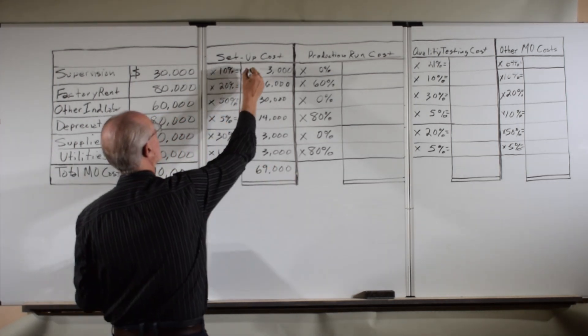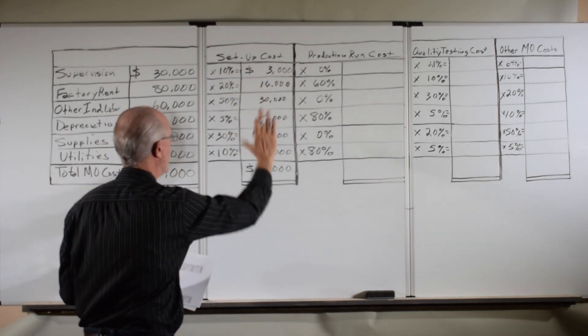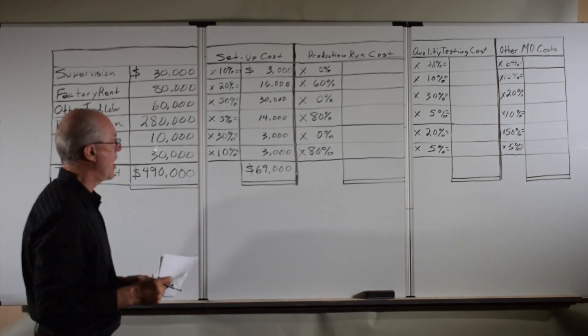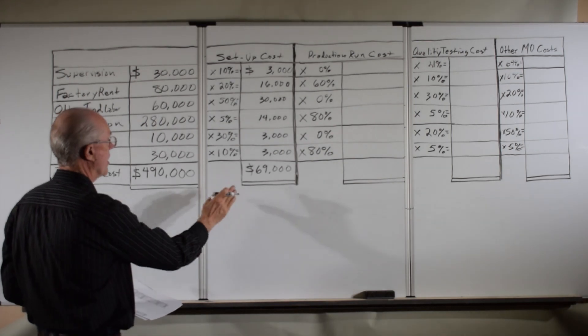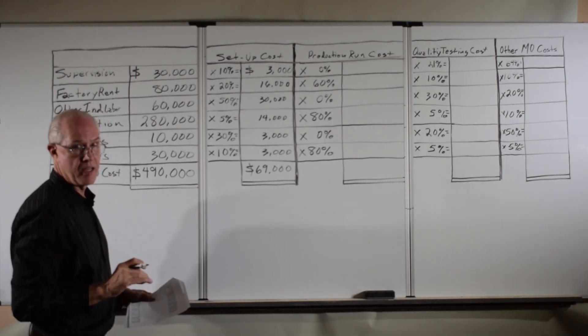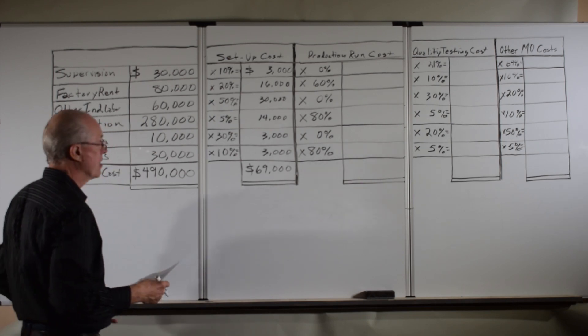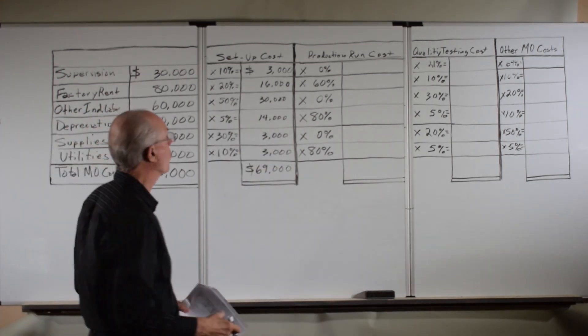So the idea is the cost of operating the setup area of our company, the indirect cost, is $69,000. So now we can use that number to calculate the overhead allocation rate, which we'll do in a minute. And we simply do the rest of the math.